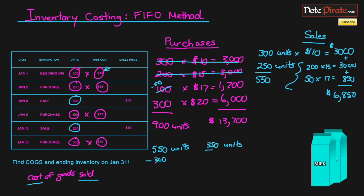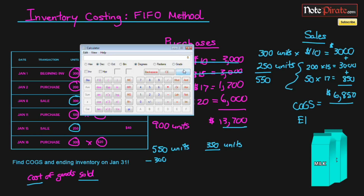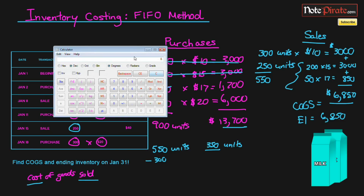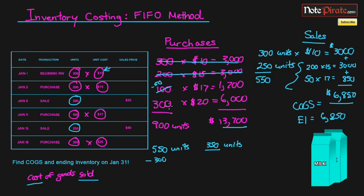There are 350 units left over. Our cost of goods sold is $6,850. To find ending inventory, we take total inventory value and subtract cost of goods sold: $13,700 minus $6,850 equals $6,850. You can double-check by looking at the remaining units: 300 units at $20 equals $6,000, plus 50 units at $17 equals $850, giving ending inventory of $6,850. Both methods confirm the same answer.